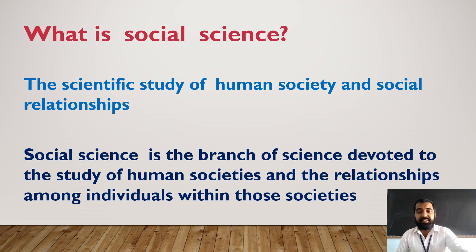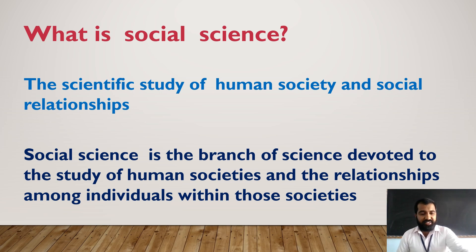Social Science is the study of activities, the physical and the social environment. It is important because its study helps us to gain knowledge of the society we live in. Generally, Social Science focuses on the relationships among individuals in society, from understanding how minds work to how societies as a whole function. The major social science branches are anthropology, archaeology, economics, geography, history, law, linguistics, politics, psychology, and sociology.